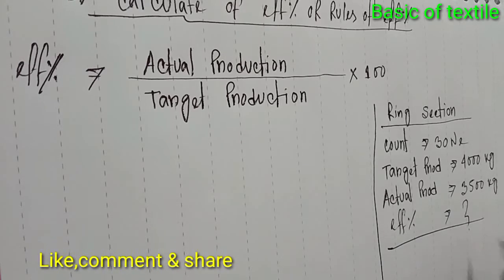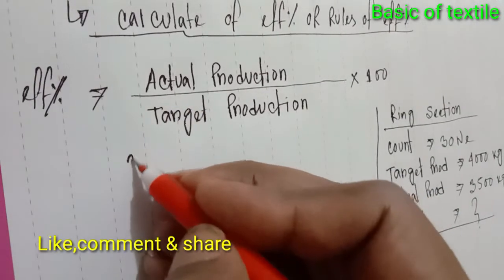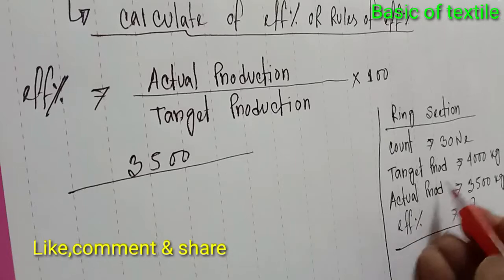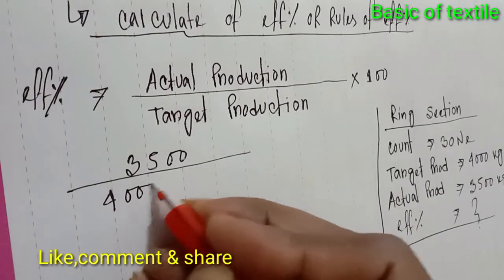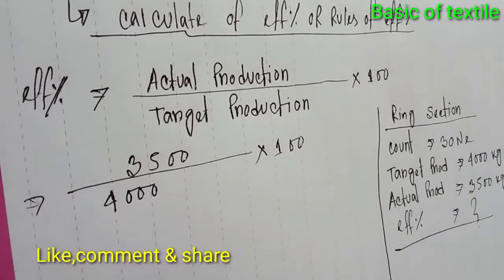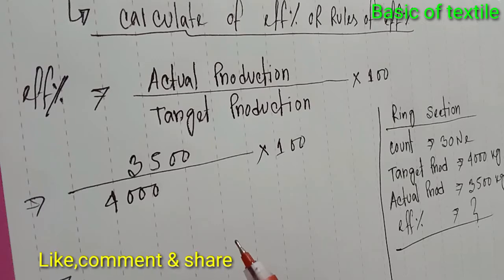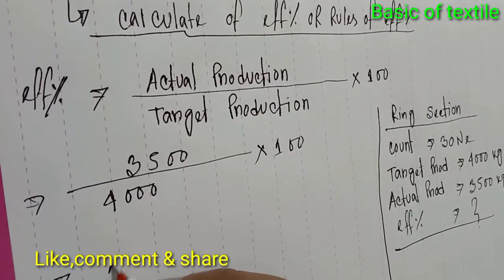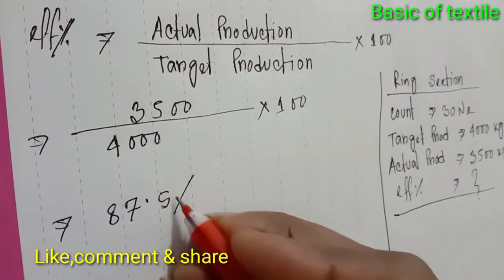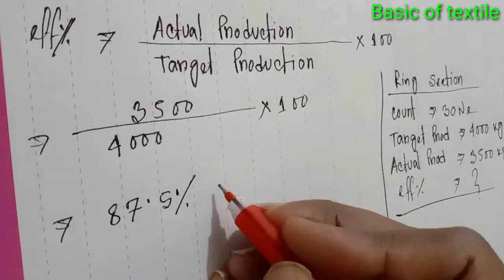The efficiency will be 3,500 kg divided by 4,000 kg, into 100, which equals 87.5%. So the achieved efficiency percent is 87.5%.